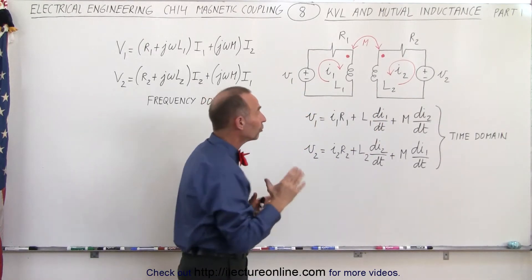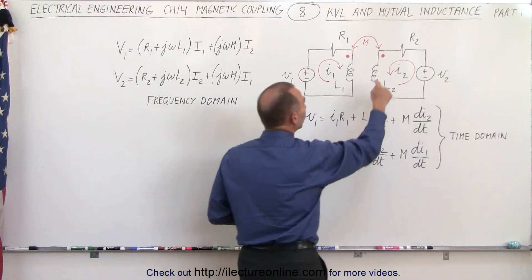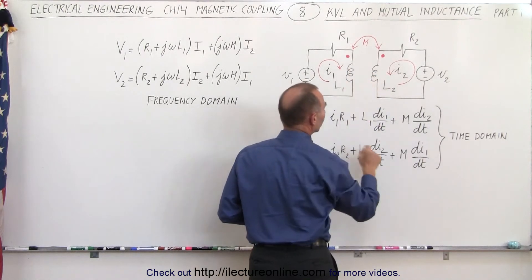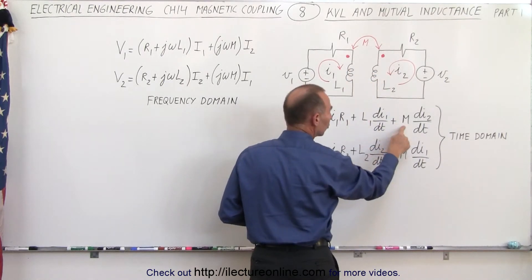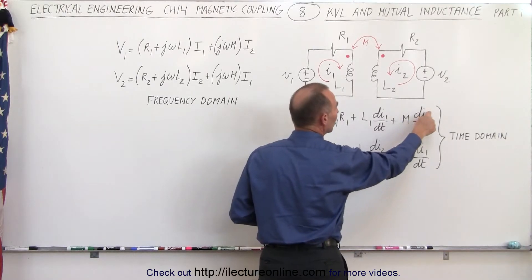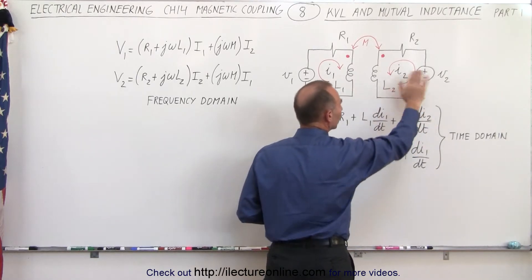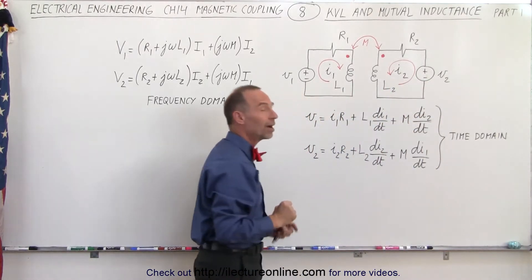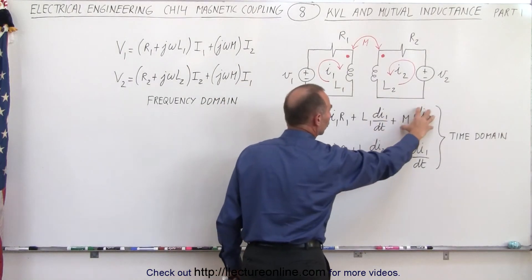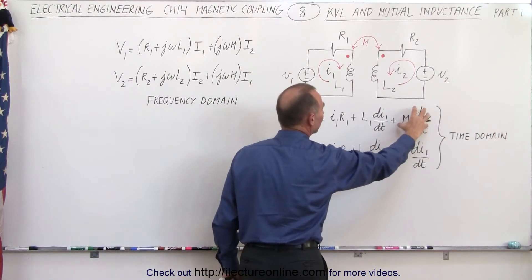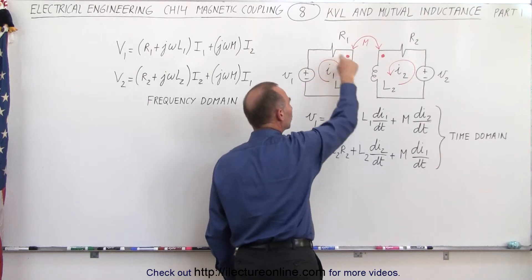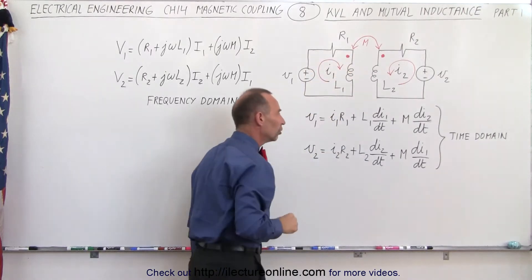We also have a voltage drop due to the mutual inductance between the two inductors, so we add an additional term: the mutual inductance times the rate of change of current that occurred in the other circuit with respect to time. You can see that there's one additional term that we need to add to the total voltage as we go around the loop.